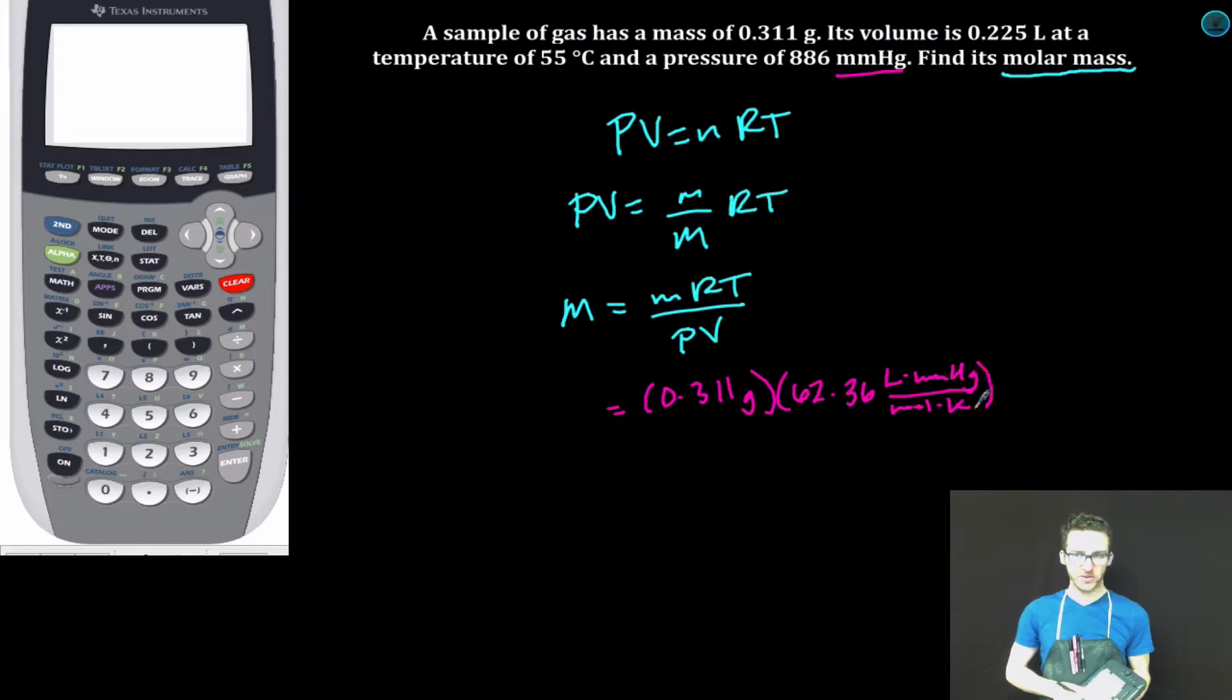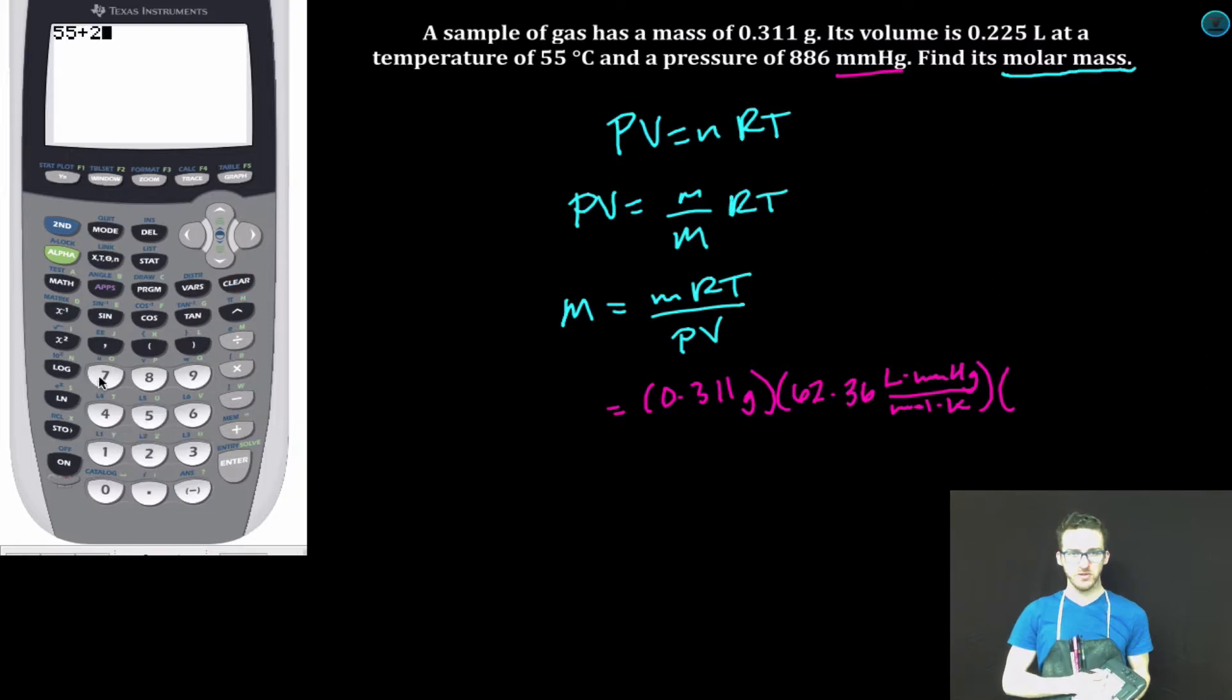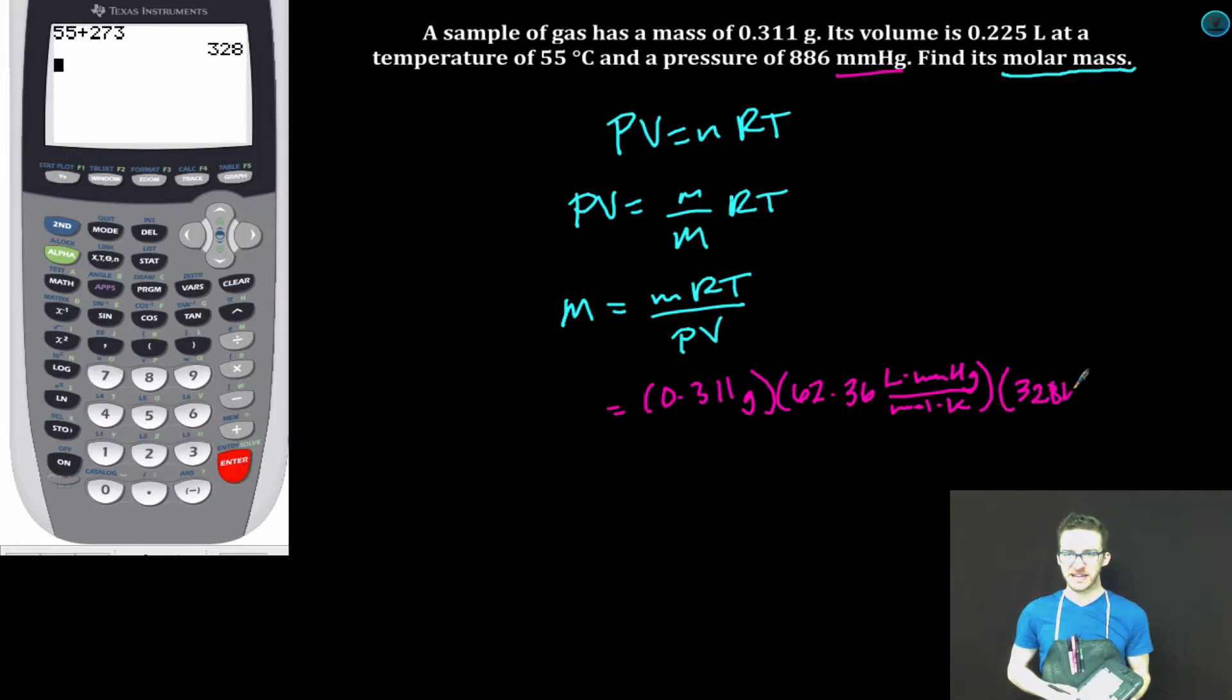Again, I know those units are kinda tedious, but I encourage you to use them. It helps you figure out what your final units are gonna be. Times my Kelvin temperature: 55 plus 273 is 328 Kelvin.